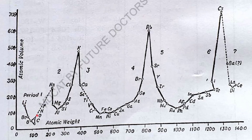We can see the atomic weights plotted along the axis. Different colors are used — the base color, the green color, and the blue color. The curve has a peak position, an ascending position, and a descending position.